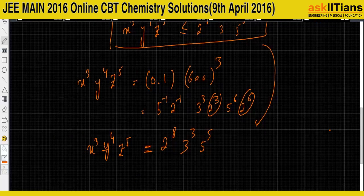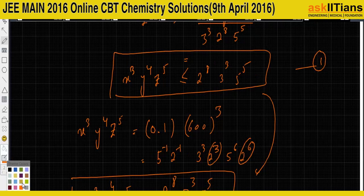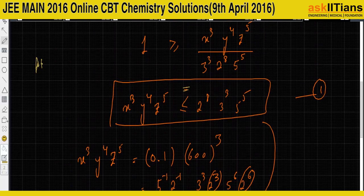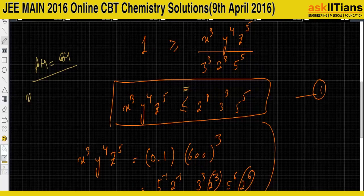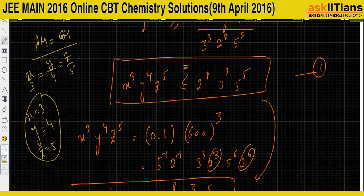Equality in AM ≥ GM holds only when all terms are equal, i.e., x/3 = y/4 = z/5. Combined with x + y + z = 12, we get x = 3, y = 4, z = 5.